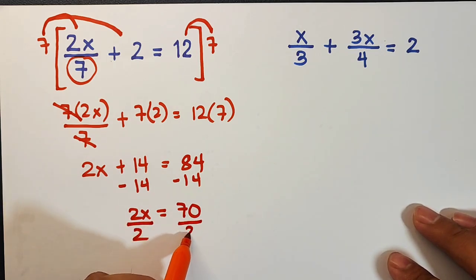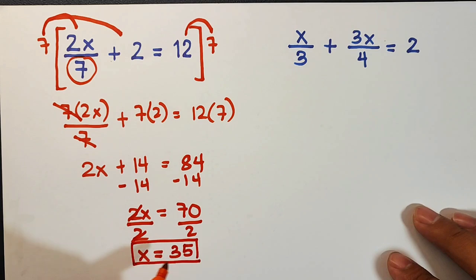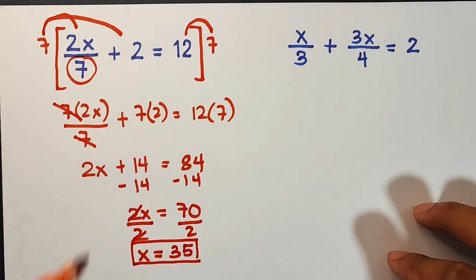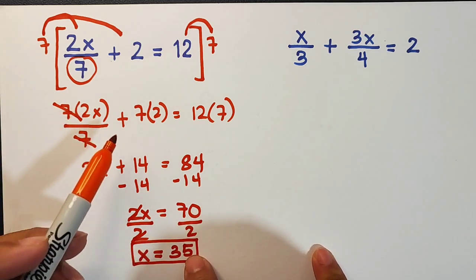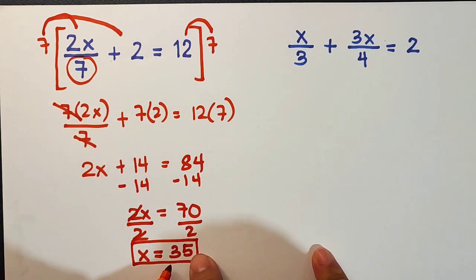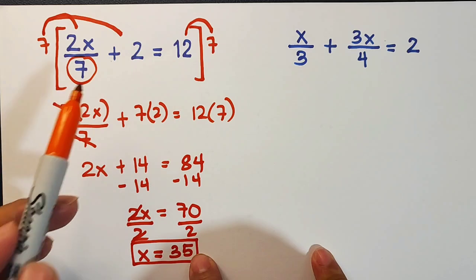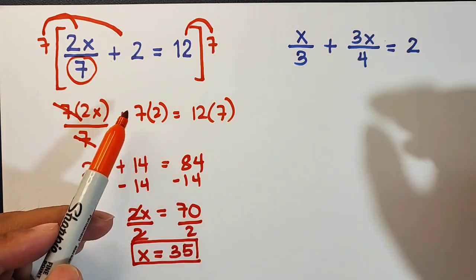Divide both sides by 2, cancel, cancel—so x is equal to 35. This is the value of x for the first equation. By the way, you can check your answer by substituting the value of x, which is 35, into the original equation. So let's move on.